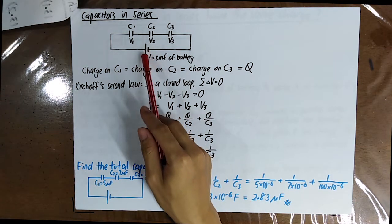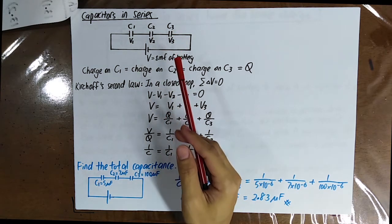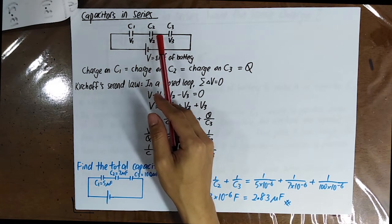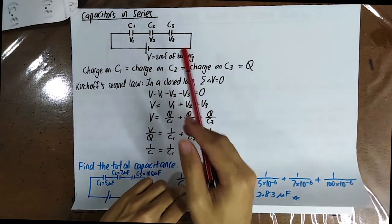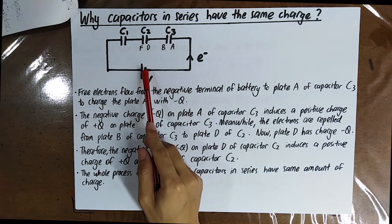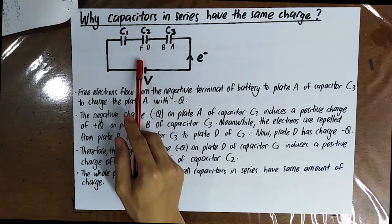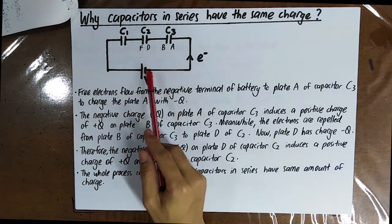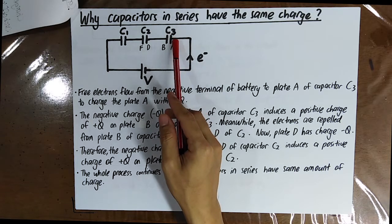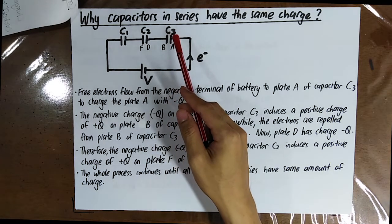There is one battery connected with three capacitors in series. The charge on C1 is equal to the charge on C2, which is also equal to the charge on C3. This is because the three electrons from the negative terminal of the battery flow to plate A of capacitor C3, so that plate A of capacitor C3 will have a charge of negative Q.